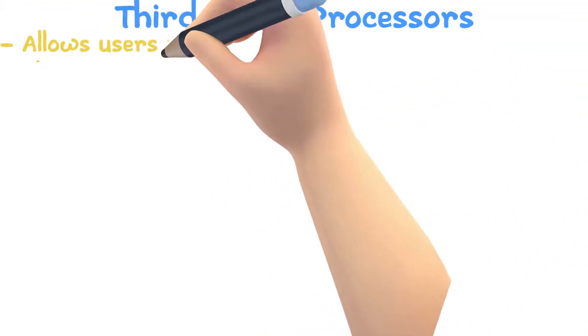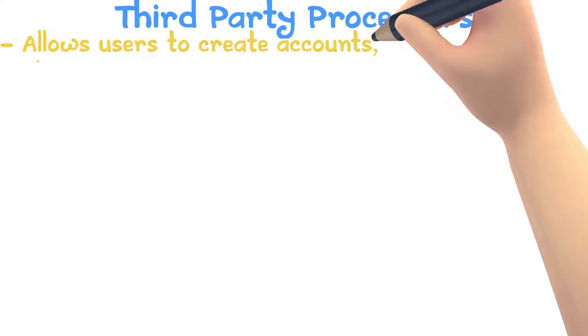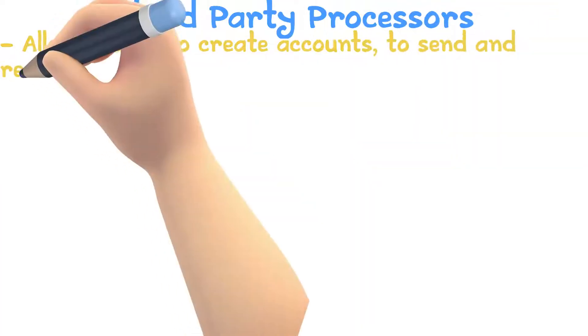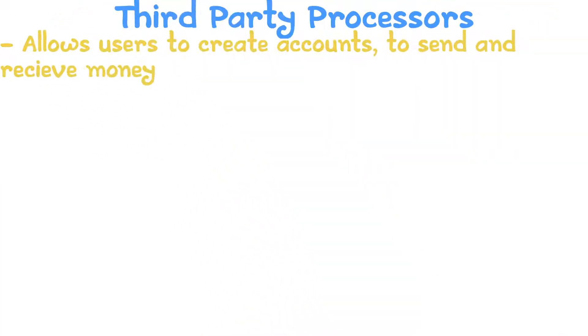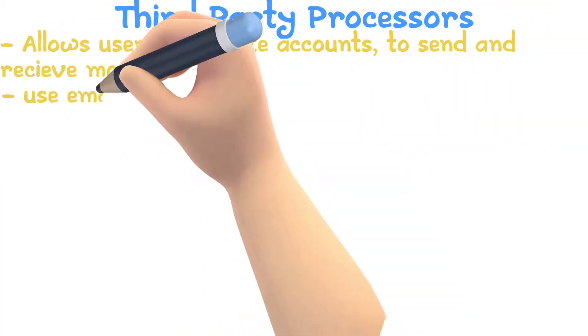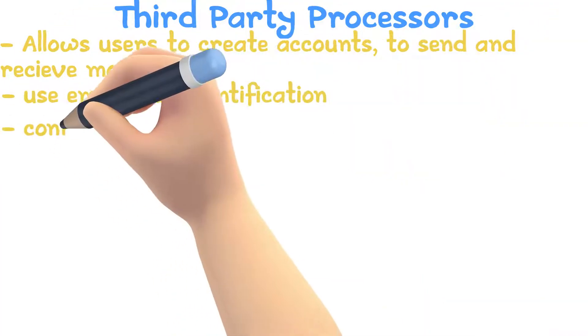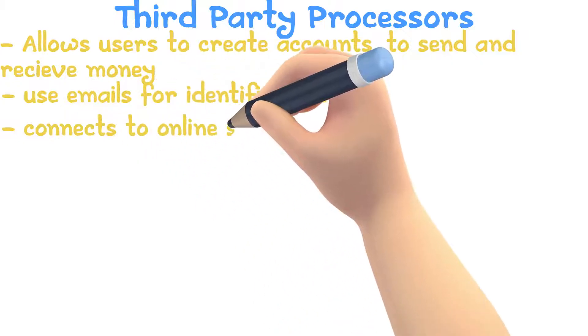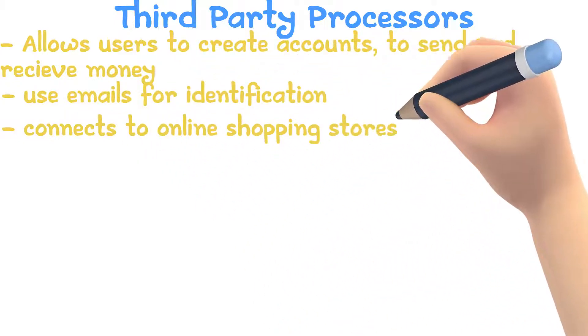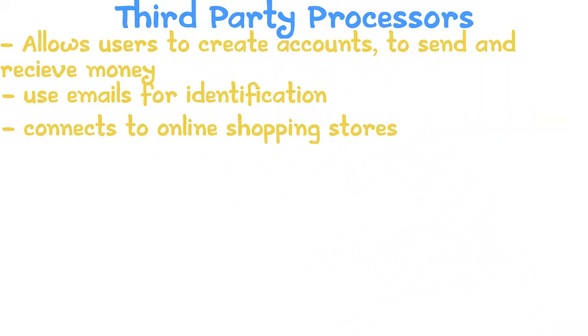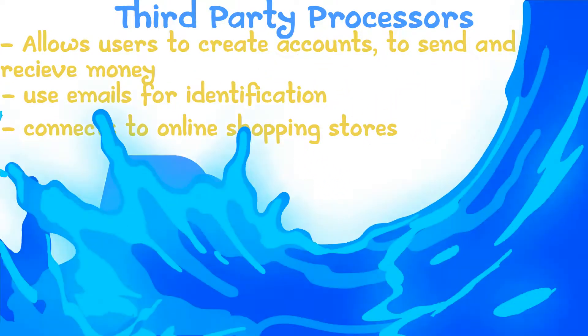Third-Party Payment Processes allow users to create accounts to send and receive money. These processes use emails for identification and often connect to online shopping stores. Some examples include PayPal and Scripps.